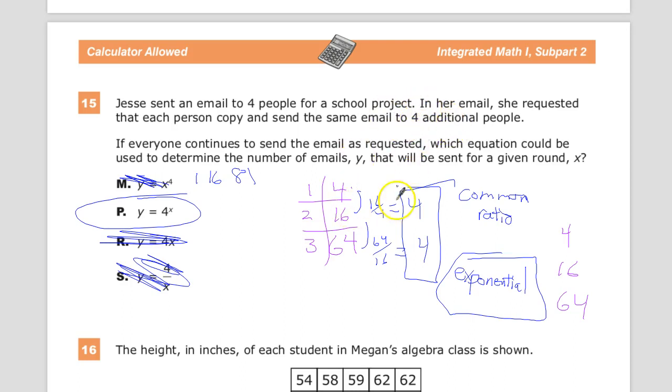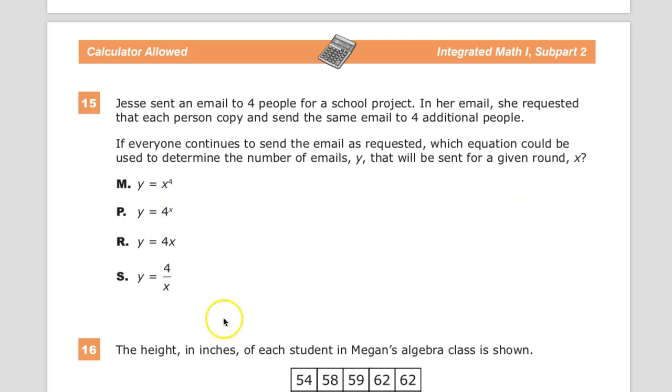But in this case, since it's four additional people every time, it'll always increase in a consistent amount based on the common ratio of four. So we say, here's the common ratio, here's the exponent, and it's the input value, and it gives us the output value of y. So there's question number 15.